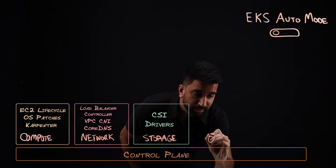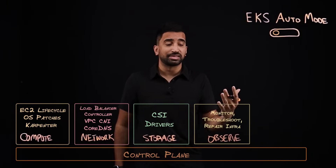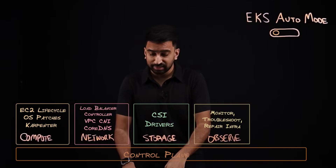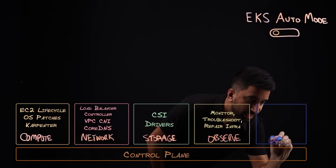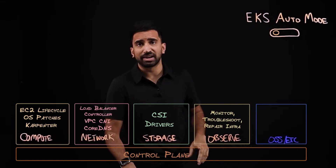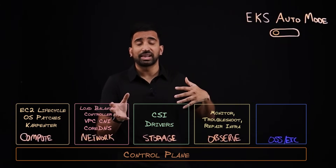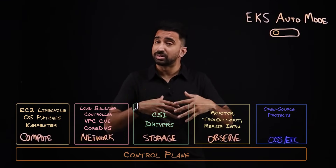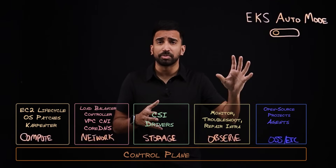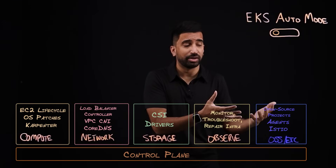Next is observability — the ability to see what's going on with your instances, troubleshoot issues, repair issues, that kind of thing. And lastly, there's a bigger bucket of open-source software and everything else that users might be managing today. This includes the wide landscape of open-source tools in the Cloud Native Computing Foundation, CNCF, which is a big reason why users love Kubernetes. In addition, any agents they might be running, third-party observability tools, and maybe a service mesh — something like Istio.